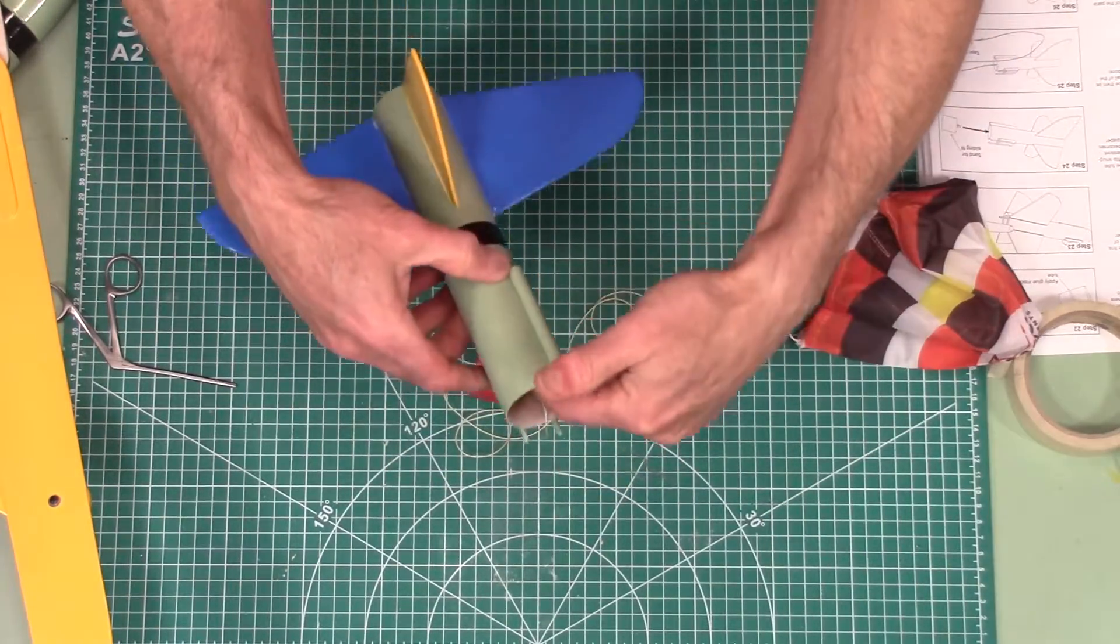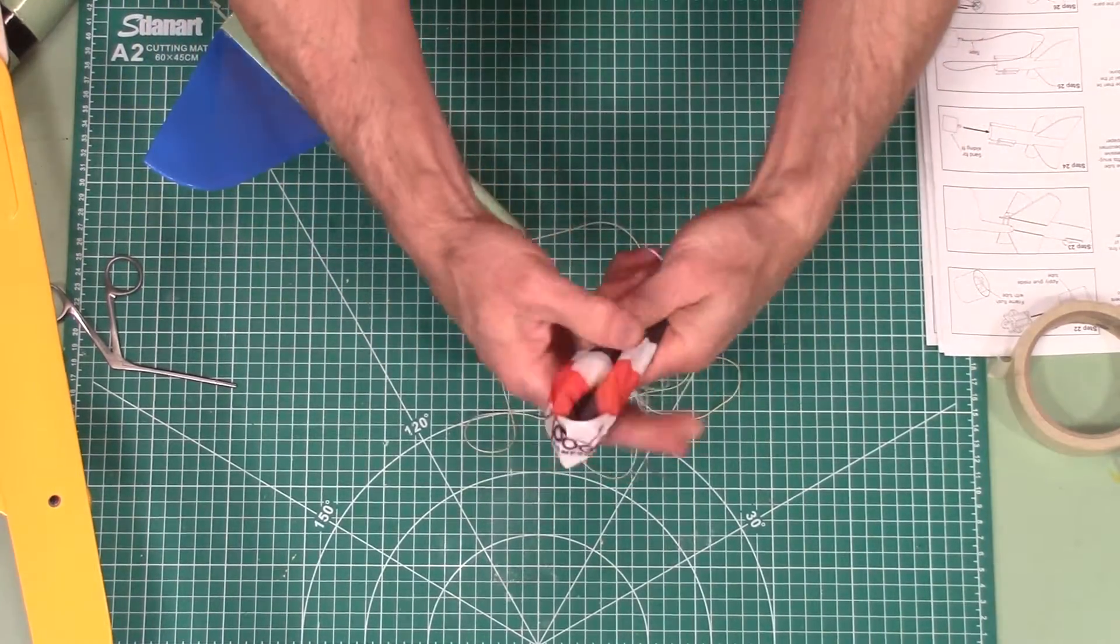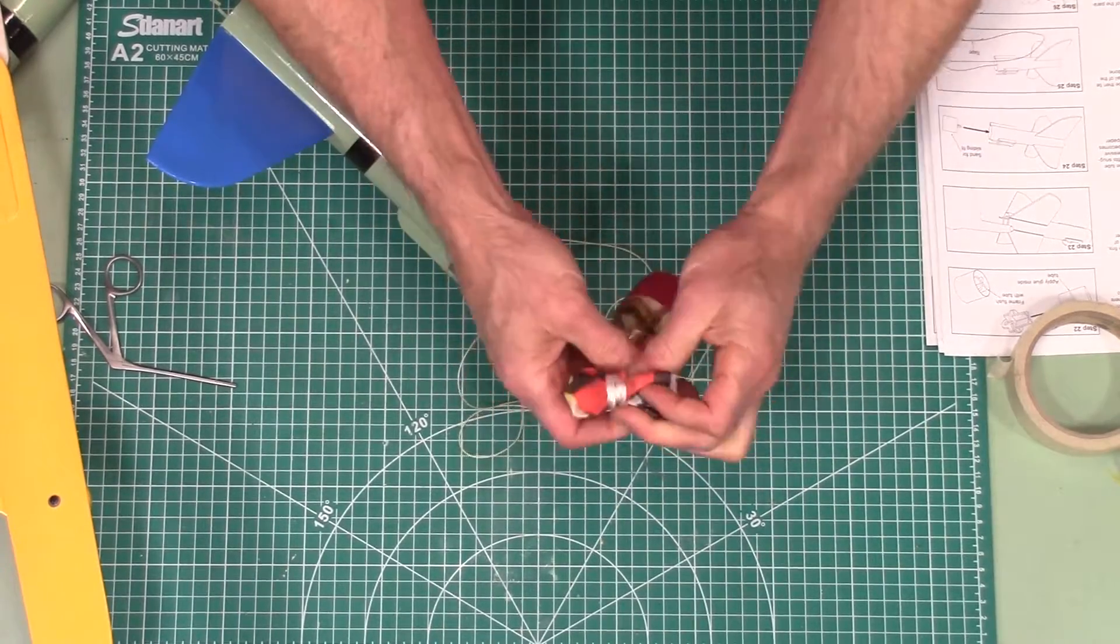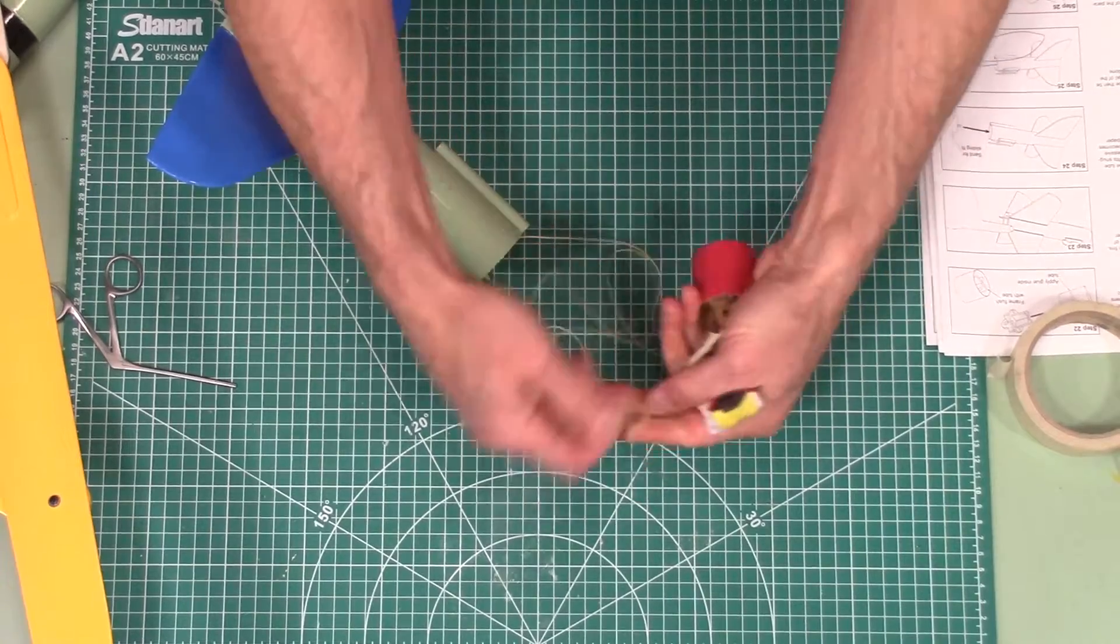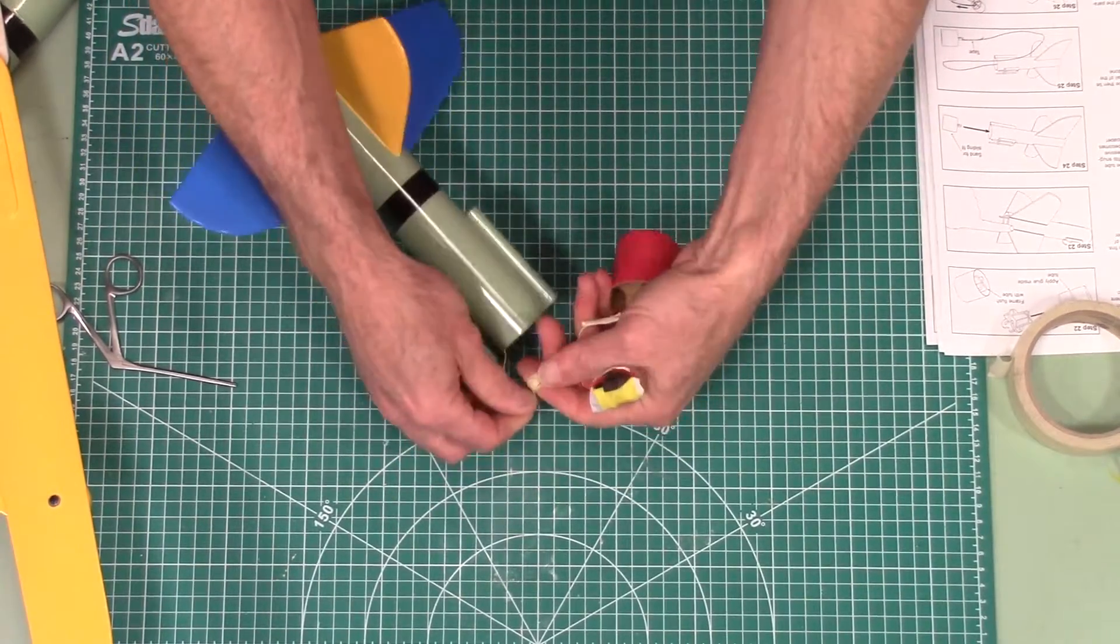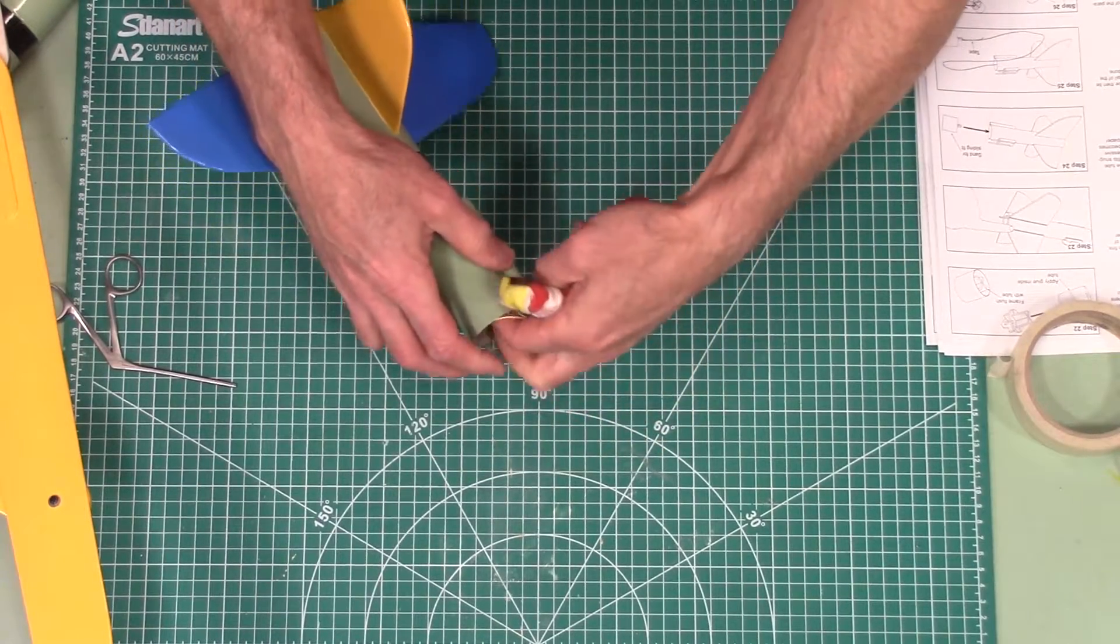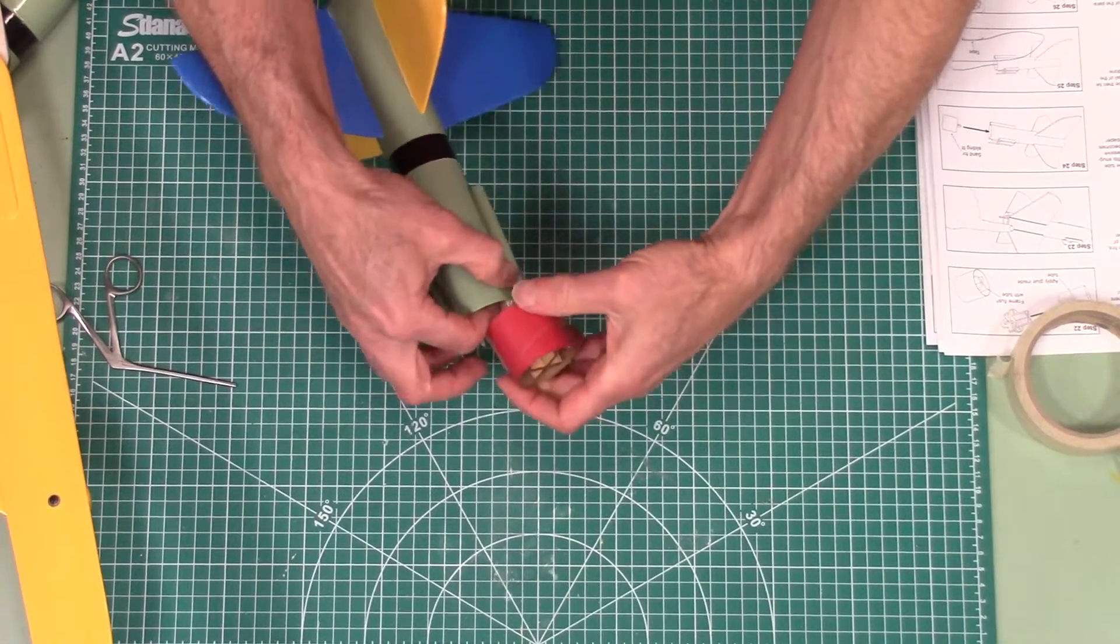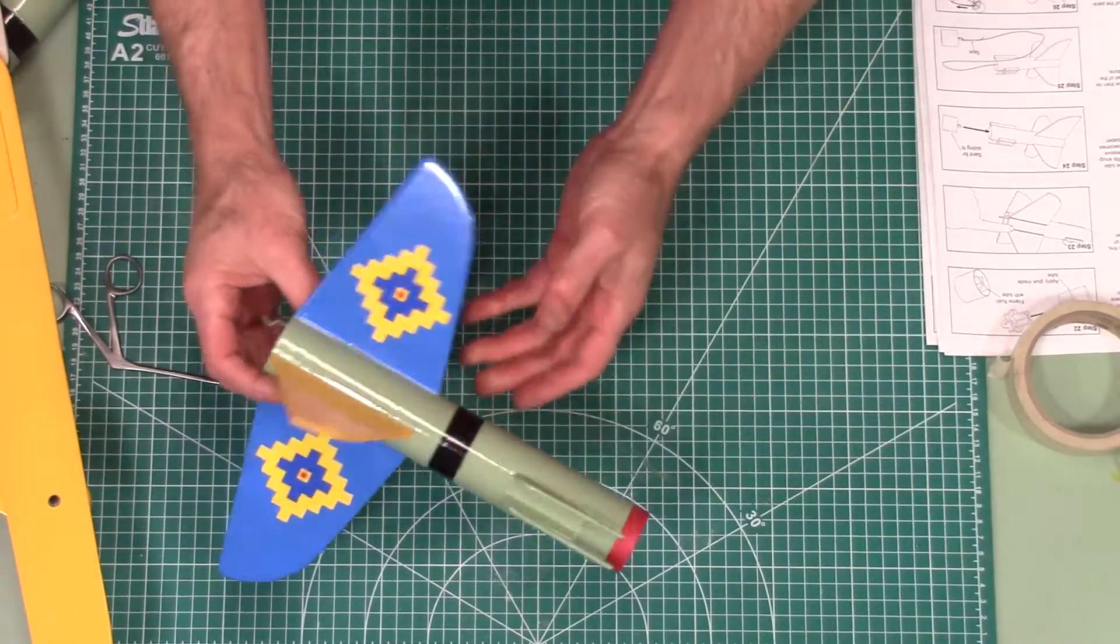You're going to stick ejection wadding inside there to protect that parachute before you launch. So make sure you do that. Wrap your parachute up. Take your shock cord, wrap that around your finger. Like that. And shove that inside. There, just like that. And that completes the booster section.